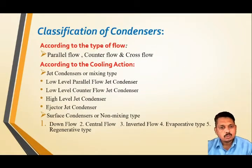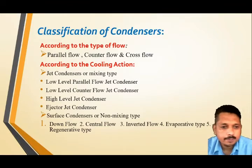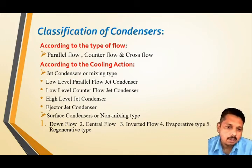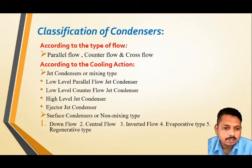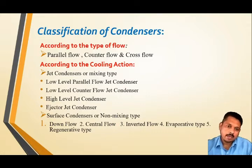According to the type of flow, we have parallel flow, counter flow, and cross flow. Today's explanation focuses on two major important types of condenser: the first is jet condenser or mixing type condenser, and the second is surface condenser or non-mixing type condenser. I am not going to explain the sub-types today, but if you want that detail, you can ask in the comment box and I will definitely provide all the details about the sub-types.